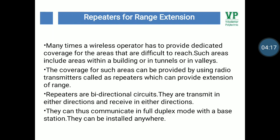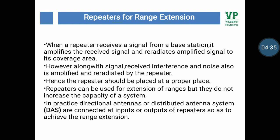Repeaters are bidirectional devices — they transmit and receive in either direction and can thus communicate in full duplex mode with a base station. They can be installed anywhere. When a repeater receives a signal from a base station, it amplifies the received signal and re-radiates the amplified signal to its coverage area. However, along with the signal, interference and noise are also amplified and re-radiated by the repeater. Hence, the repeater should be placed at a proper location. Repeaters can be used for extension of range but they do not increase the capacity of the system.